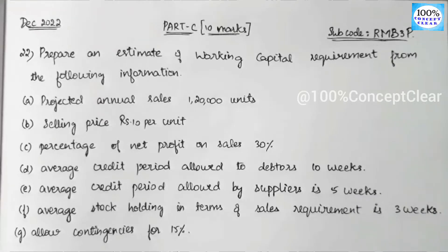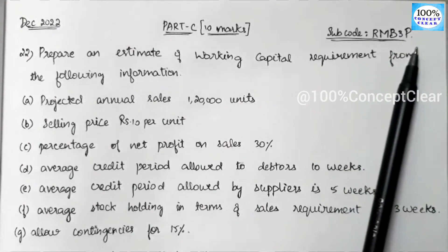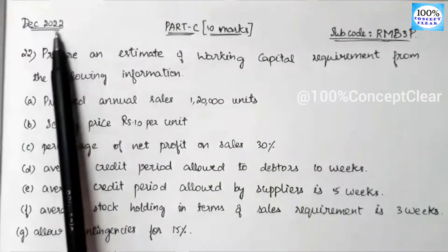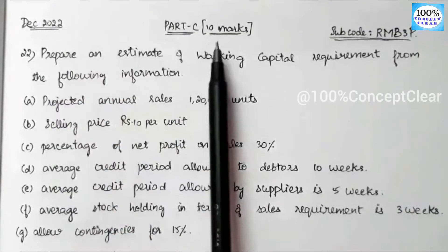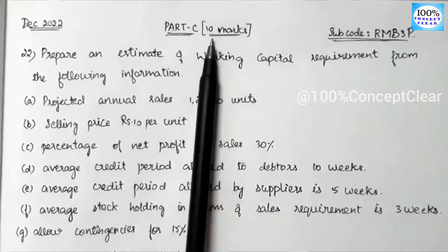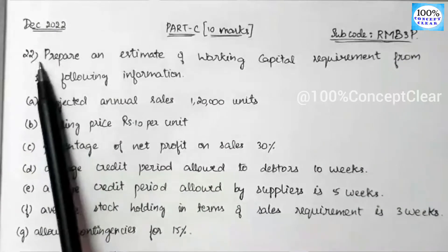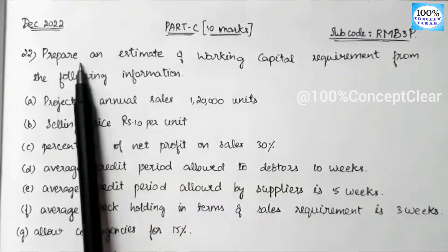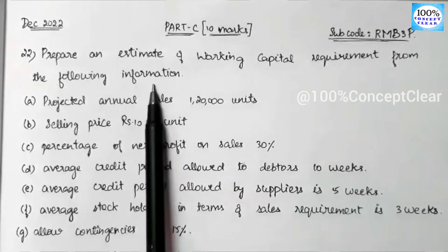In this video, we have a Financial Management subject. The subject code is RMB3P. We will look at the question paper from December 2020. We will solve Part C, which is worth 10 marks.